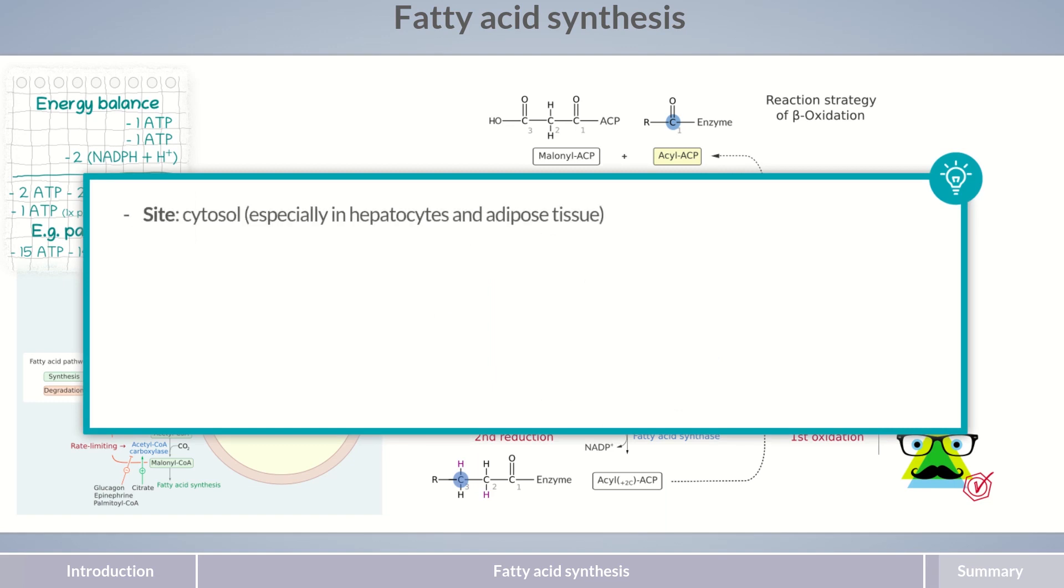Fatty acid synthesis occurs in the cytosol, especially within hepatocytes and adipose tissue. In fatty acid synthesis, acetyl-CoA is converted to malonyl-ACP, from which fatty acids, especially palmitic and stearic acid, are formed.